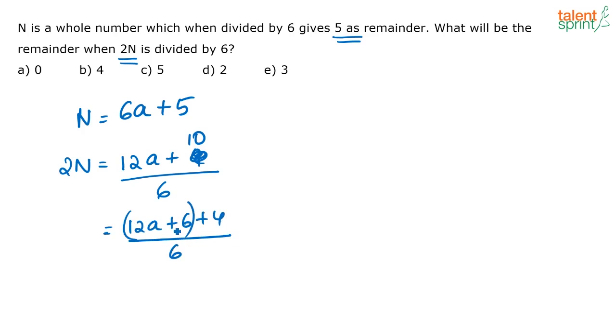So this term is again definitely divisible by 6, or this is nothing but 6 into 2a plus 1, plus 4. So when you actually divide this full number by 6, the remainder that you get will be 4.